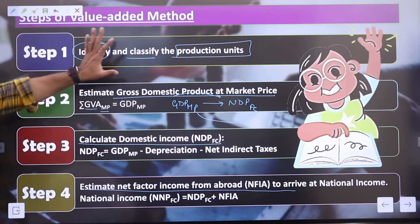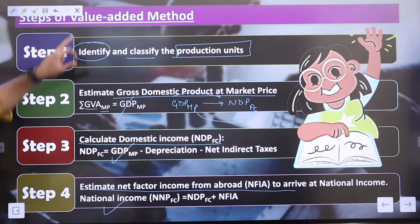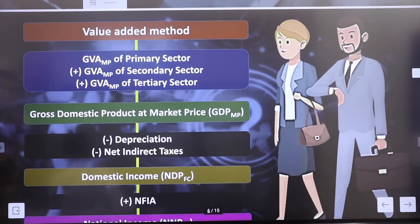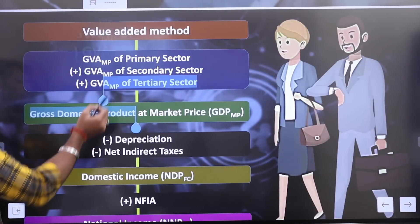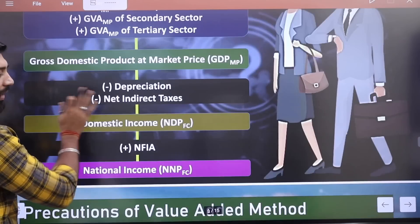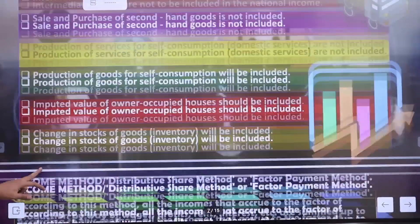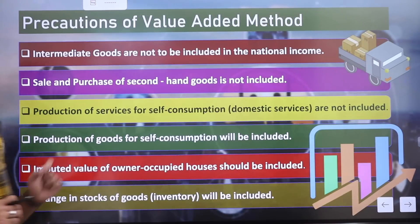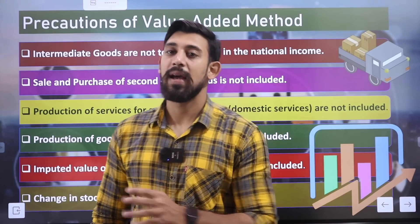So the steps are: first, classify the production units; then GDP at MP; then NDP at FC; then NNP at FC — done. In the value added method specifically: calculate GVA of the primary sector, GVA of the secondary sector, GVA of the tertiary sector, then add the three to get GDP at MP. From GDP at MP, go to NDP at FC, then NNP at FC. Now let's look at the precautions of the value added method — what things we need to be careful about.